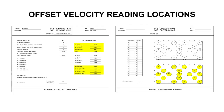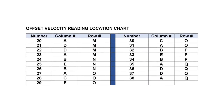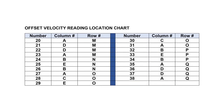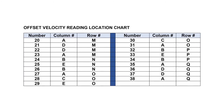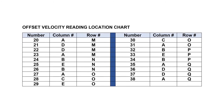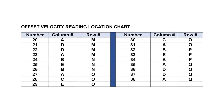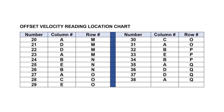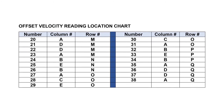Use this method referencing the coil reading dimensions for the offset velocity reading locations, intersections 20 through 38. This chart documents the intersections for the offset velocity reading locations 20 through 38.